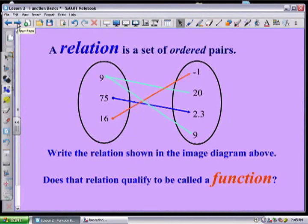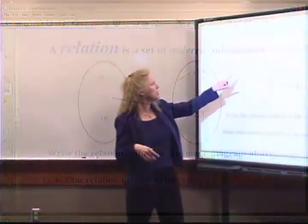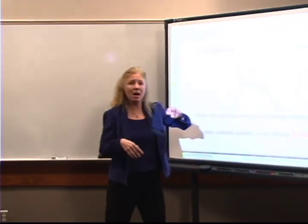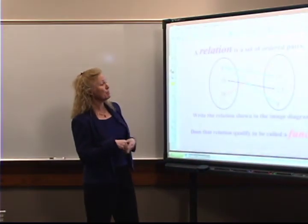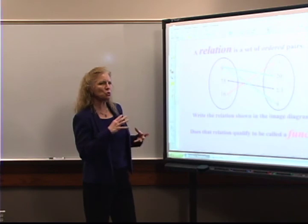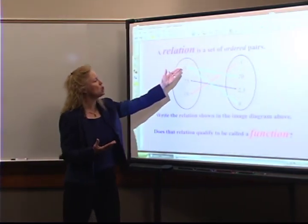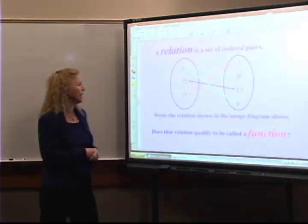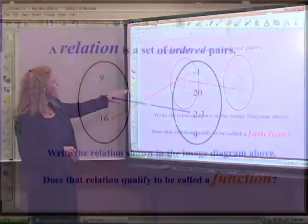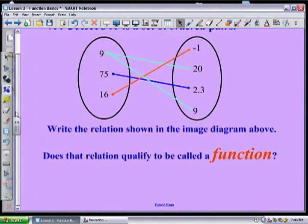Now I know that sounds like psychology class, but in math a relation is simply a set of ordered pairs. It kind of makes sense because what we're doing is connecting things. What I like about this particular image is that it shows you how they're related — the arrow clearly indicates you have a starting and an ending place. So let's write this relation.